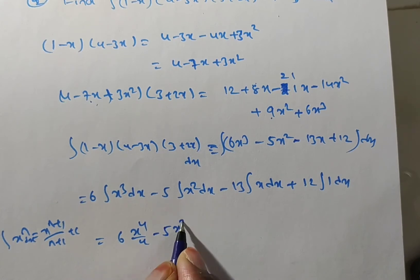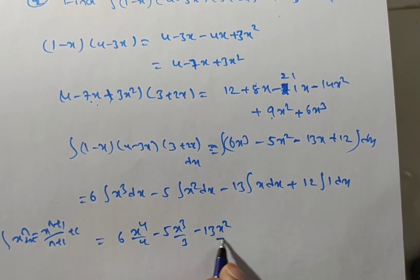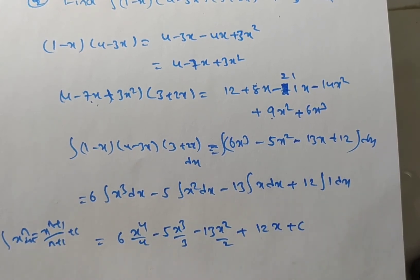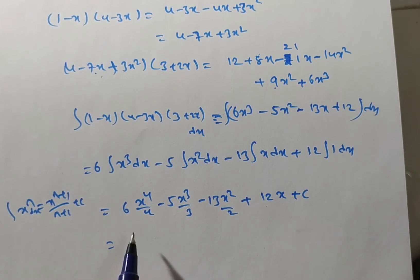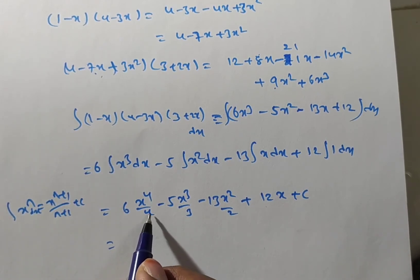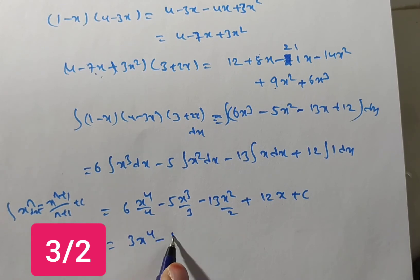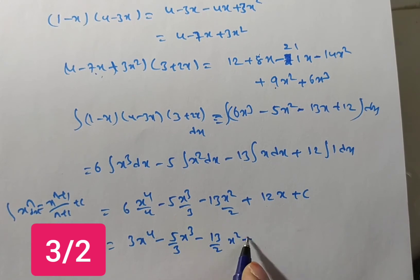Continuing: minus 5 times x cubed divided by 3, minus 13 times x squared divided by 2, plus 12x plus c. Simplifying: 6 divided by 4 gives 3, so the final answer is 3x to the power of 4 minus 5 over 3 times x cubed minus 13 over 2 times x squared plus 12x plus c.